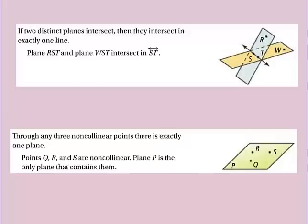Two more: if two distinct planes intersect, then they intersect at exactly one line. Looking at this diagram — you've got the blue plane intersecting with the yellow plane, and they intersect at this line. Just like two lines intersect at a point, it's the same idea. A 3D object intersects at a 2D object; lines where the 2D object intersects at a 1D object, just one point. So plane RST and plane WST intersect at line ST.